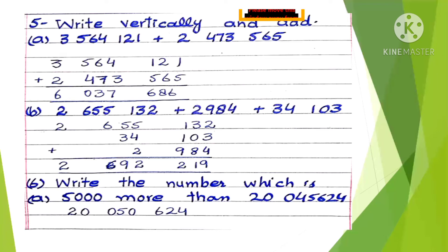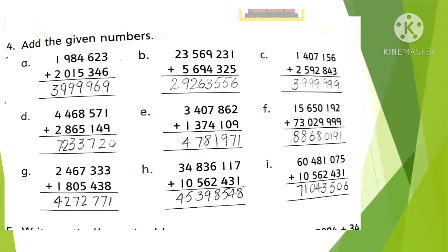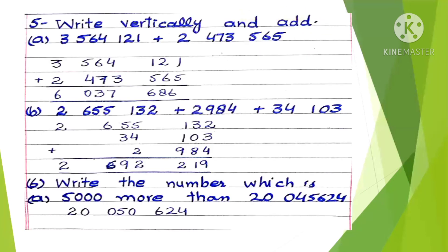Question 5: Write the numbers vertically and add them using the same method as Question 4. There are two parts for you to do yourself. Question 6: Write the number which is 5,000 more than this amount — you just add 5,000 to this amount and you get the required value.